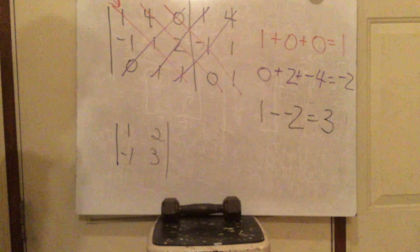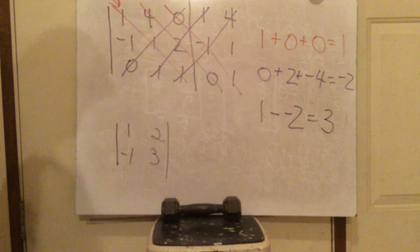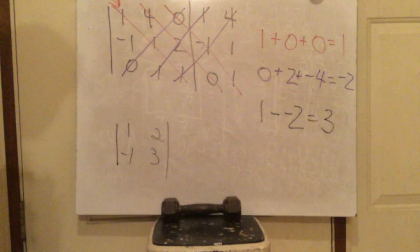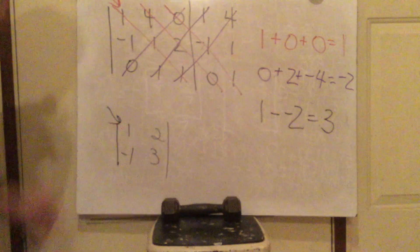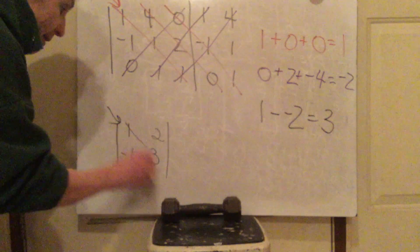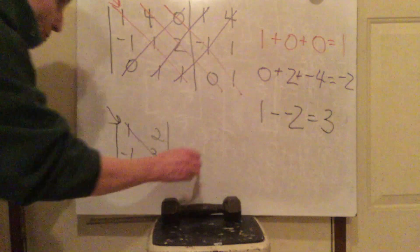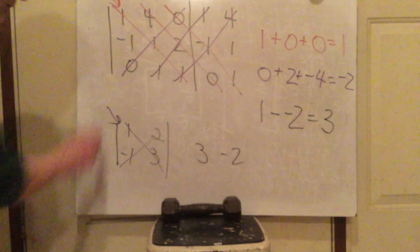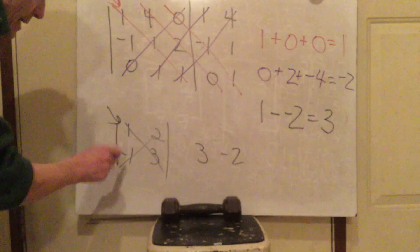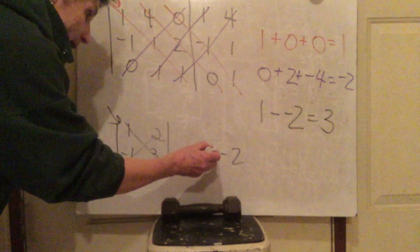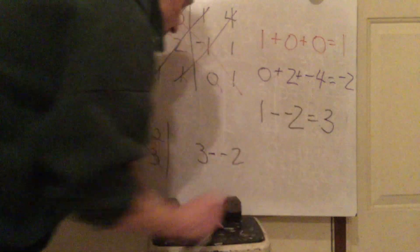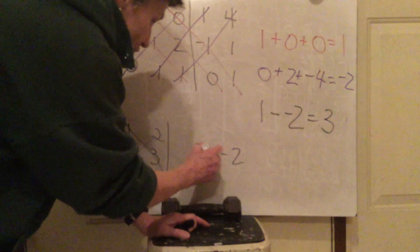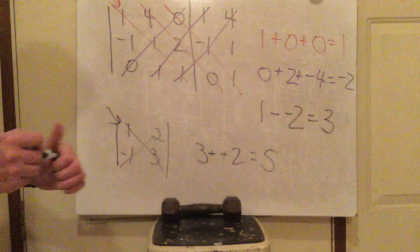The last determinant is a 2×2. Always start in the same spot. We only have one multiplication each way: 1 times 3 equals 3, and negative 1 times 2 equals negative 2. Subtract just like before: 3 minus negative 2 equals 5. That determinant is 5.